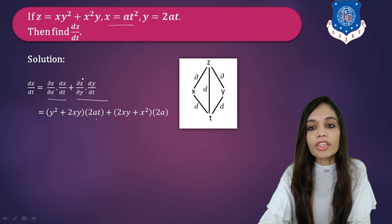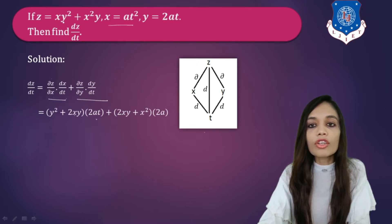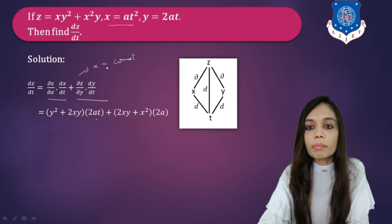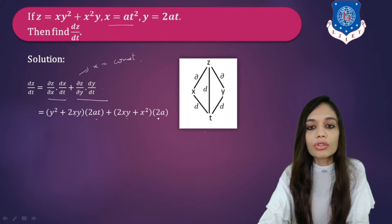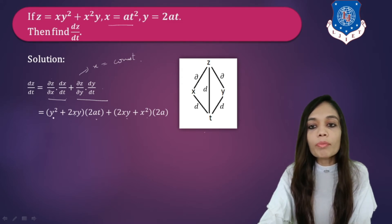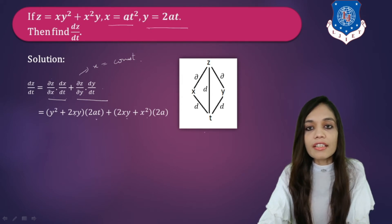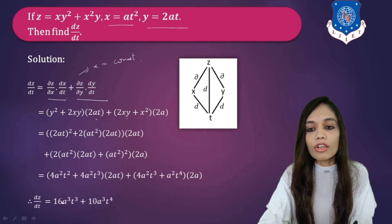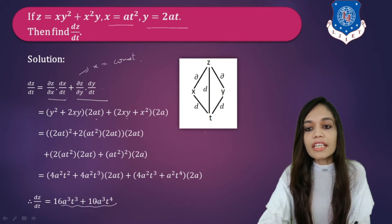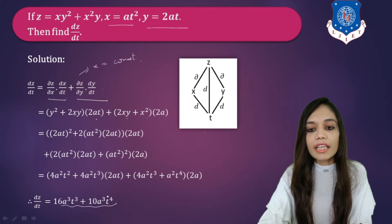Now find ∂Z/∂Y, keeping X constant: the answer is 2XY + X². The derivative dY/dT, where Y = 2at, gives 2a. Finally, substitute X = at² and Y = 2at into the equation and simplify to get the final answer of dZ/dT.